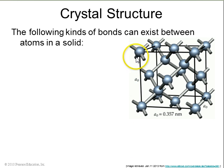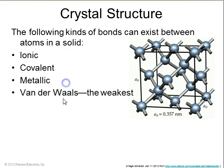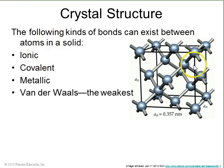Whenever you have a crystal, the bonds between neighboring atoms can be ionic, covalent, metallic, or van der Waals. Ionic bonds means that two neighboring atoms have actually transferred an electron over, so one atom becomes positive and the other becomes negative. Salts are a good example of ionic bonds, like sodium chloride.